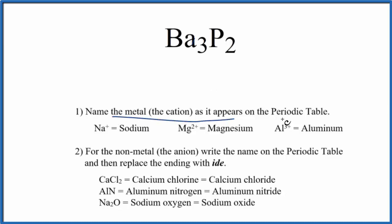First, we write the name of the metal as it appears on the periodic table. So Ba, that's barium. And then we write the name of the nonmetal as it appears on the periodic table. So P is phosphorus.